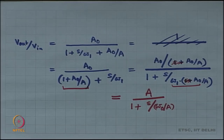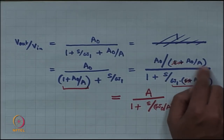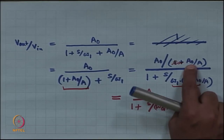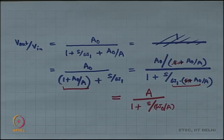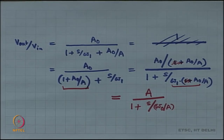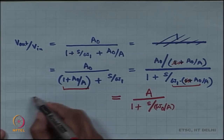The DC gain works out to be exactly A. It was A naught by 1 plus A naught by A, which I have simplified to A by assuming that A naught is much, much larger than A. And unless you make this assumption, you would not get that perfect gain of A that you wanted. So A certainly has to be much, much smaller than A naught for this to work.